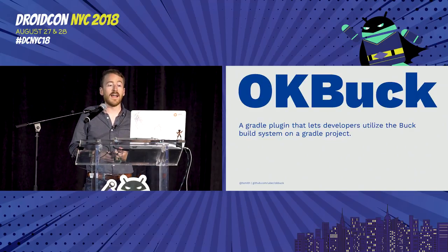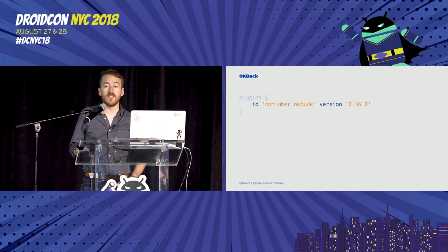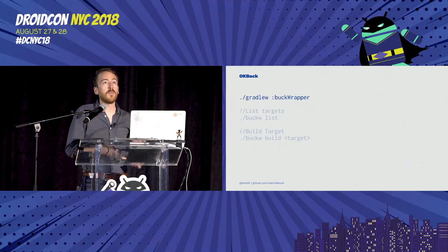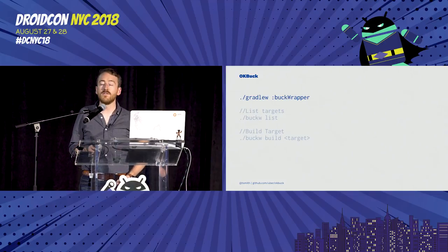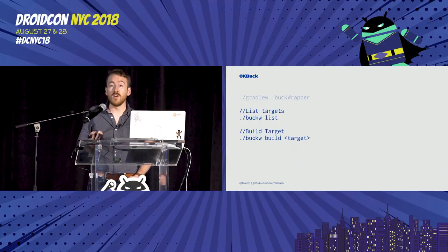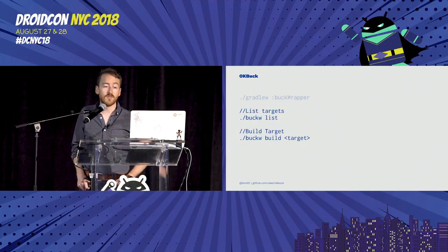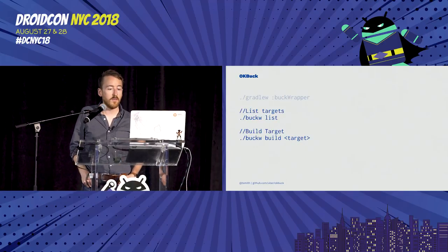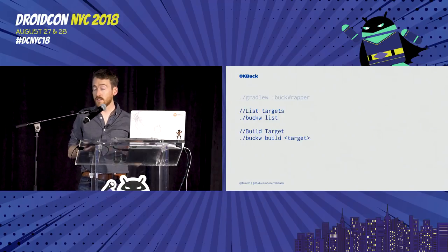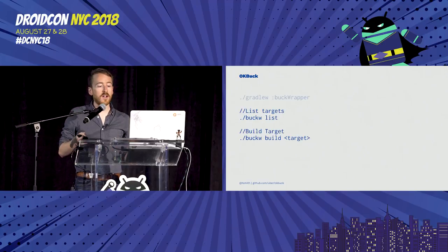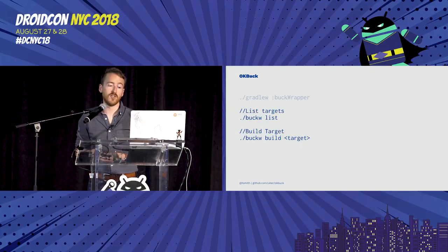To address the hard-to-configure scripts and lack of features like dependency management in Buck, let me tell you about our open source project called OKBuck. OKBuck is a Gradle plugin you can add to your Gradle scripts following the standard pattern. You execute a Gradle task that generates a BuckWrapper object, which configures your project and creates BuckConfig scripts per module — eliminating the need to write nasty configs yourself. The BuckWrapper also downloads, installs, and updates Buck automatically, with minimal overhead using a daemon that watches the files.